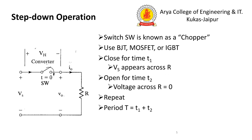The switch closes for time T1, during which the source voltage Vs appears across the load R. The switch opens for time T2, during which the voltage across R equals zero. This process repeats, with the total time period T equal to T1 plus T2.